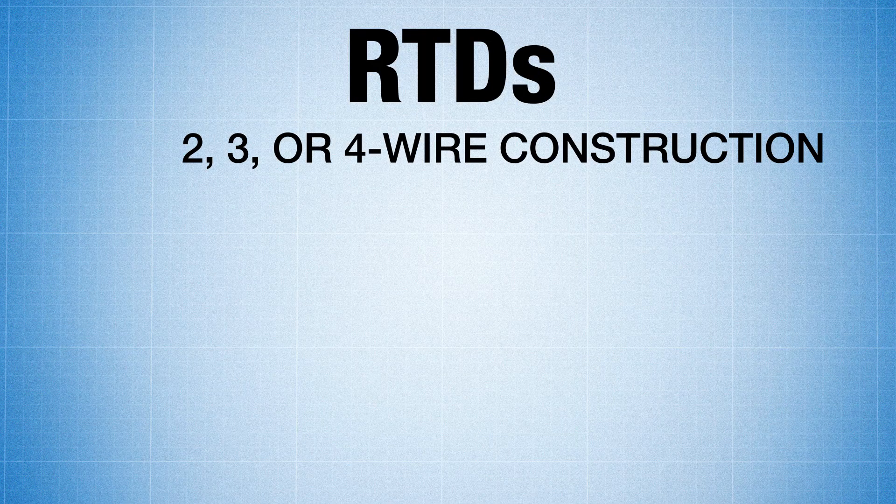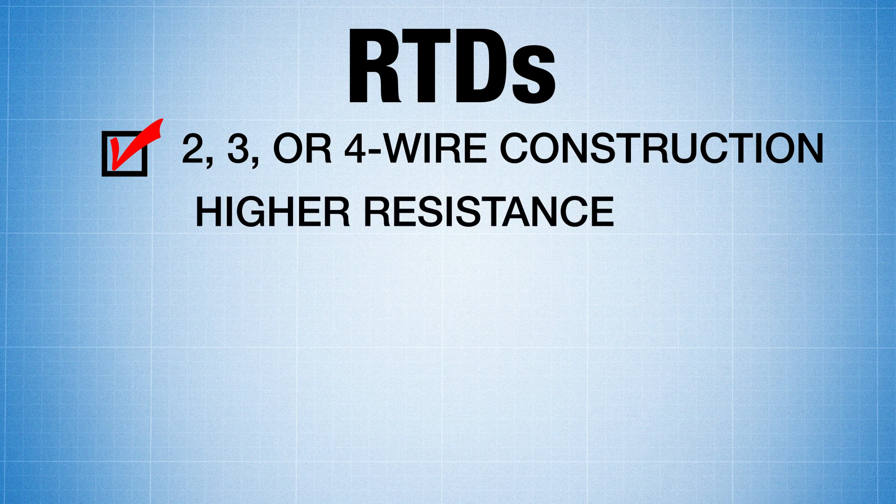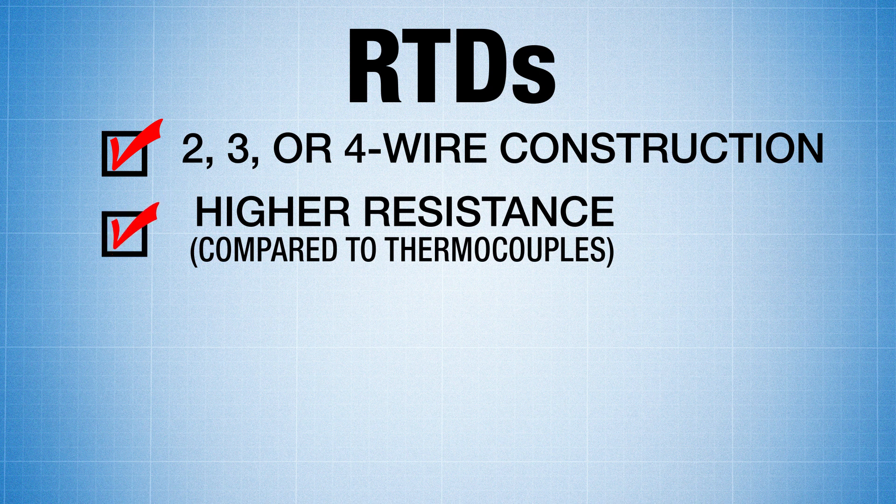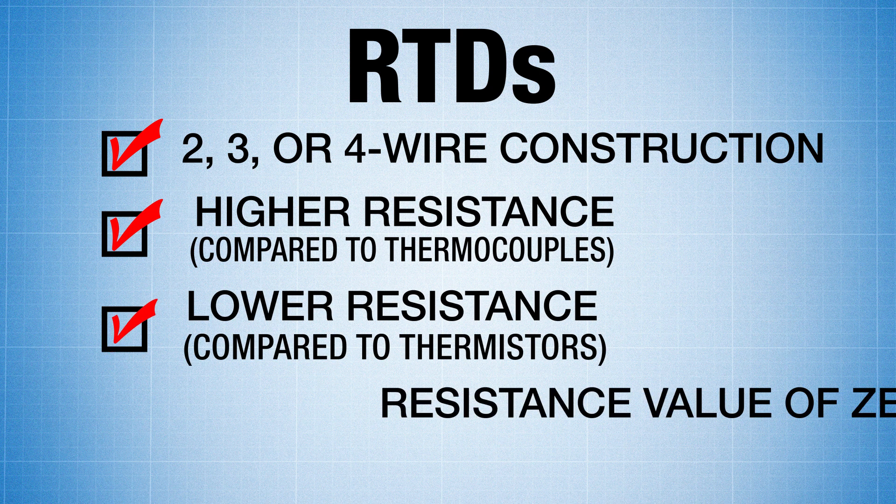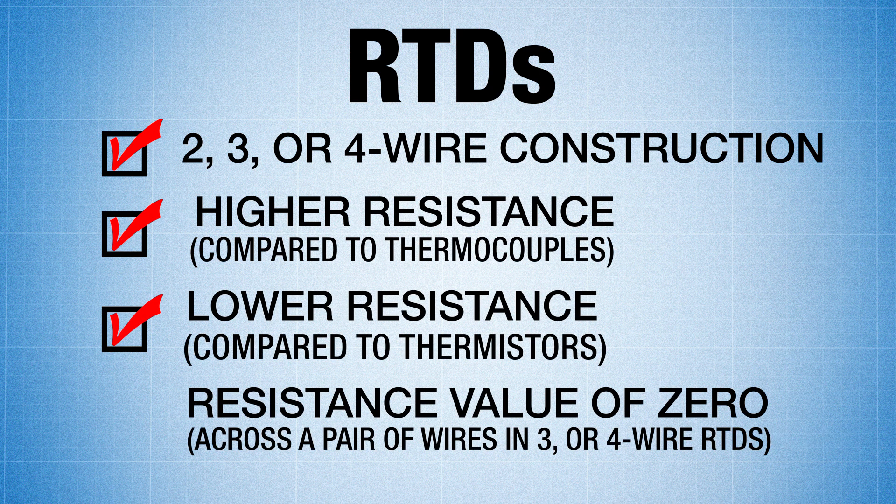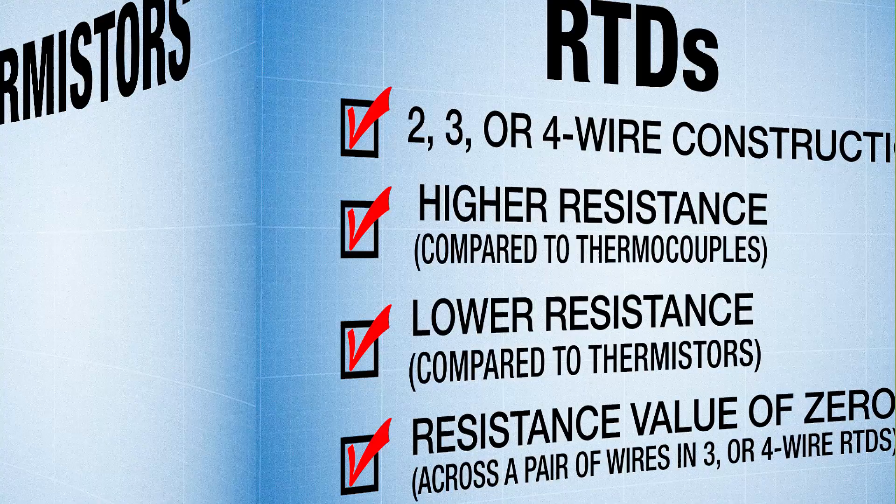RTDs can come in a two-, three-, or even a four-wire construction. They have higher resistance compared to thermocouples and a lower resistance compared to thermistors. Resistance value of zero across a pair of wires in a three- or four-wire construction.